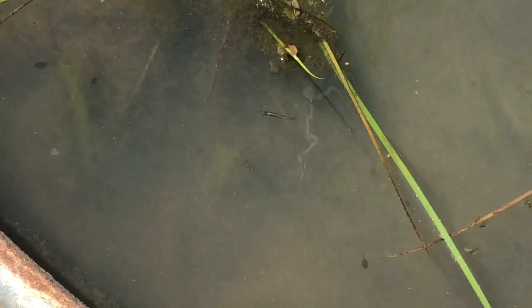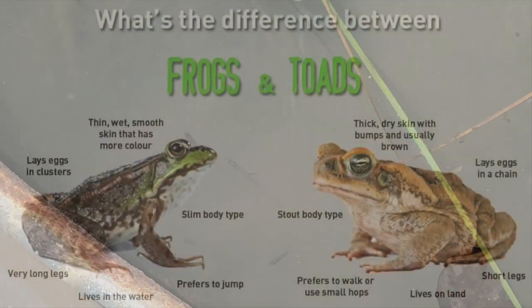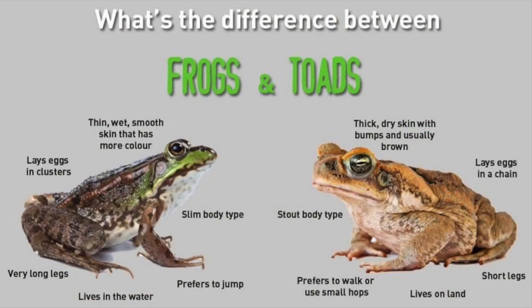These tadpoles will grow up to be toads. Now how do I know that they'll be toads instead of frogs? What's the difference between toads and frogs? The main differences are frogs have longer legs, live in the water, and they lay their eggs in clusters or clumps. While toads have shorter legs, they live on the land most of the time, and they lay their eggs in a chain or a strand like we see in our pond this spring.